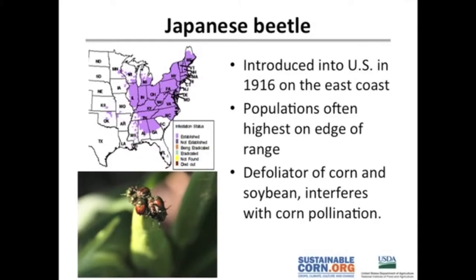Japanese beetle is another example. At least in Iowa this year, it's been a big conversation because it showed up fairly early and in fairly high numbers due to very good overwintering. With the warm temperatures, it showed up about two to three weeks early. Japanese beetle was introduced in the United States in 1916, and if you look at where it's a problem, it's usually on the leading edge — the middle of Iowa and even into eastern Nebraska and South Dakota. Japanese beetles eat a lot of foliage and can also interfere with corn pollination by feeding on the silks.